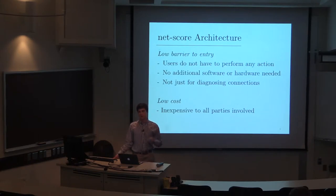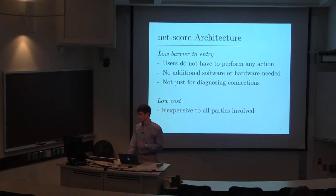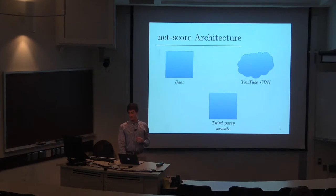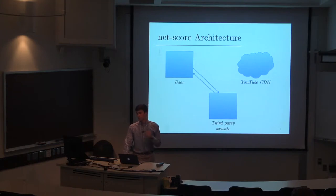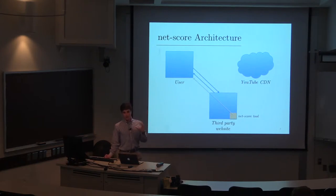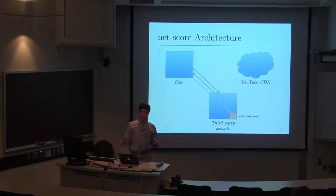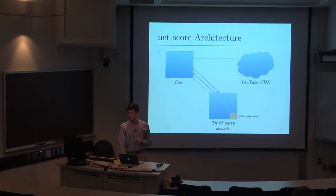We use YouTube to provide a server that's close to users and representative of a typical path a user might take while browsing the internet. To step through what a NetScore test looks like: there are three parties involved. The user contacts the third-party website they want to visit and retrieves all objects necessary for browsing that website. Our NetScore tool is also retrieved — we embed about six or seven lines of JavaScript at the end of an HTML file on whatever page we want to embed our tool on.